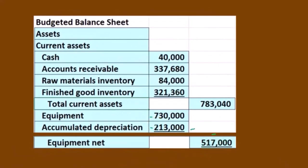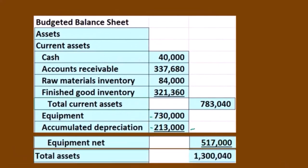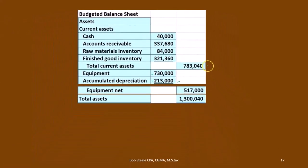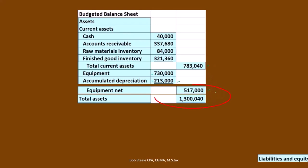Then we're going to have the total assets, which appear in the outer column. Current assets of $783,000 plus the $517,000 gives us total assets of $1,300,053.